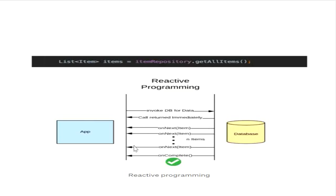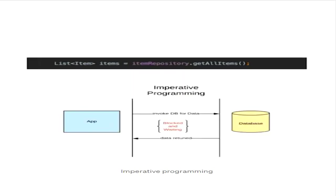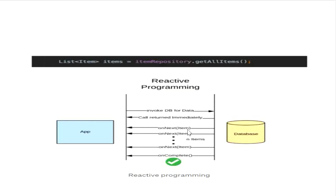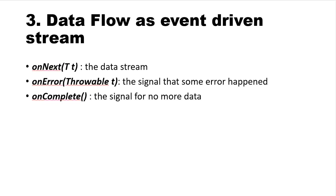That was the happy path scenario. If an error occurs while getting records from the database — for example, after getting the first record, if business logic throws an error on the second — then the next onNext event will not execute and onComplete will also not execute. Instead, the onError event will be executed. So there are three events: onNext, onError, and onComplete, which we will explore further in upcoming videos.